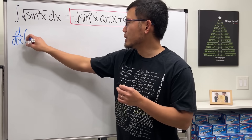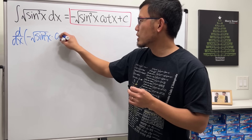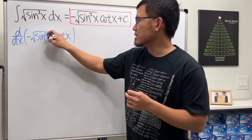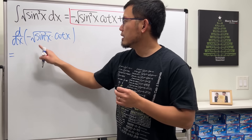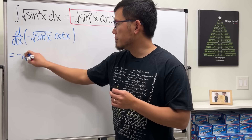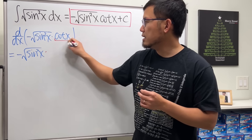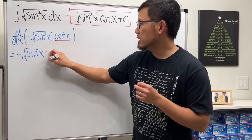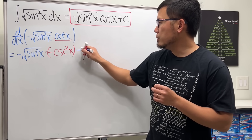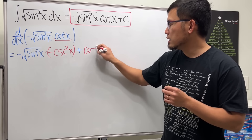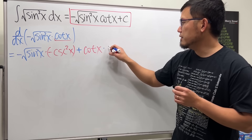We're looking at the derivative of negative square root of sine squared x times cotangent x. The plus c doesn't matter — that gives zero. Product rule in action: this is the first function; keep that and multiply by the derivative of the second. The derivative of cotangent x is negative cosecant squared x.